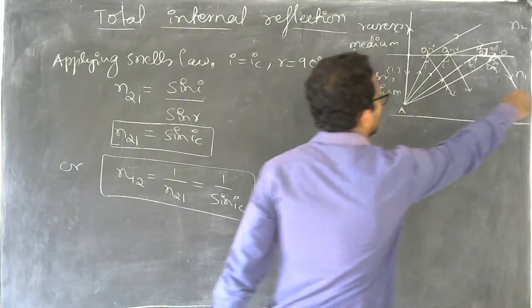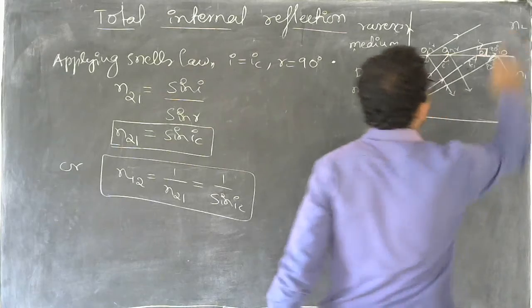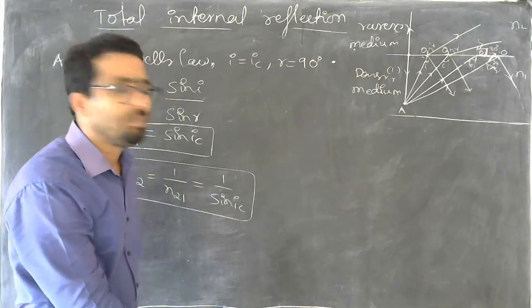n1 is the refractive index of this medium, n2 is the refractive index of the other medium.